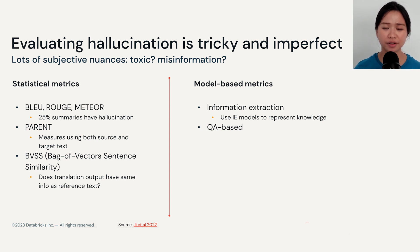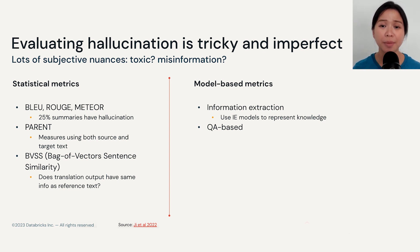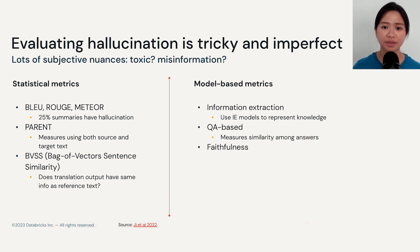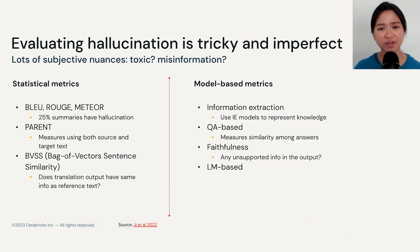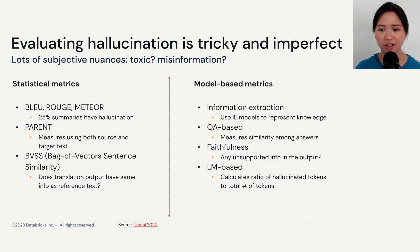The second model-based metric is question answering based, which measures faithfulness by measuring similarity among different answers to the same question. The third metric is a faithfulness metric that asks whether the output contains any unsupported information. The last one is language model based, using a language model to calculate the ratio of hallucinated tokens to the total number of target tokens.